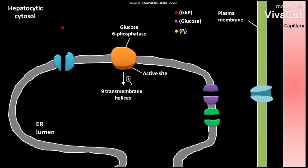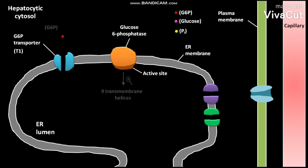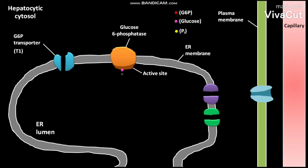The glucose-6-phosphate transporter, or G6P transporter (T1), is present on the ER membrane. The cytosolic glucose-6-phosphate (G6P) is transported by T1 into the ER lumen. In the ER lumen, G6P binds to the active site of glucose-6-phosphatase and is converted to glucose and Pi.